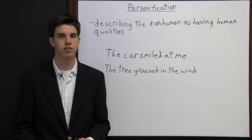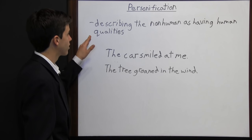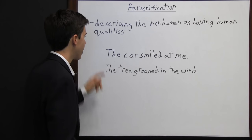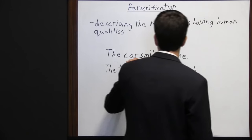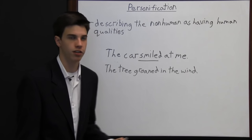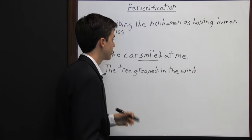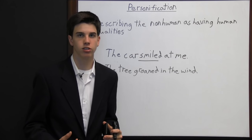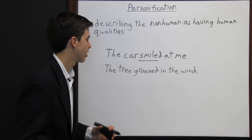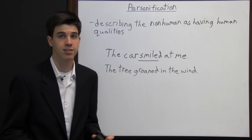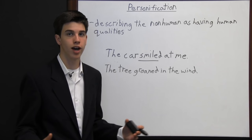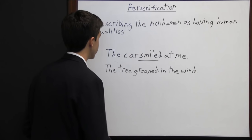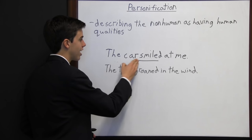Personification is a type of figurative language in which the writer describes the non-human as having human qualities. Look at this elementary example: "the car smiled at me." The car is described as smiling, but smiling is a human quality. The car didn't actually smile because it's not a human, but for whatever reason it appeared to the narrator that the car smiled — maybe the front of the car is configured to look like a face.